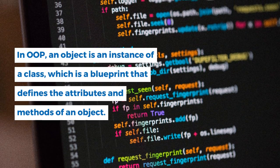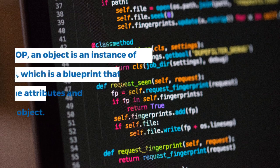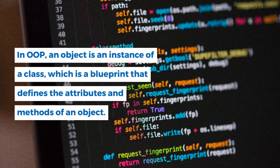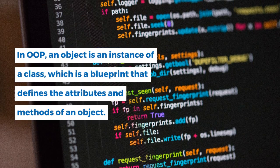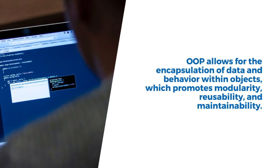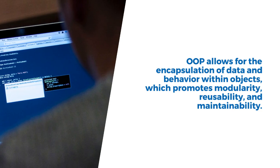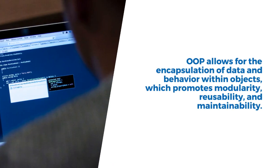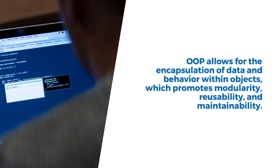OOP allows for the encapsulation of data and behavior within objects, which promotes modularity, reusability, and maintainability. OOP also provides mechanisms for inheritance, which allows classes to inherit attributes and methods from parent classes, and polymorphism, which allows objects to be treated as instances of their parent classes.